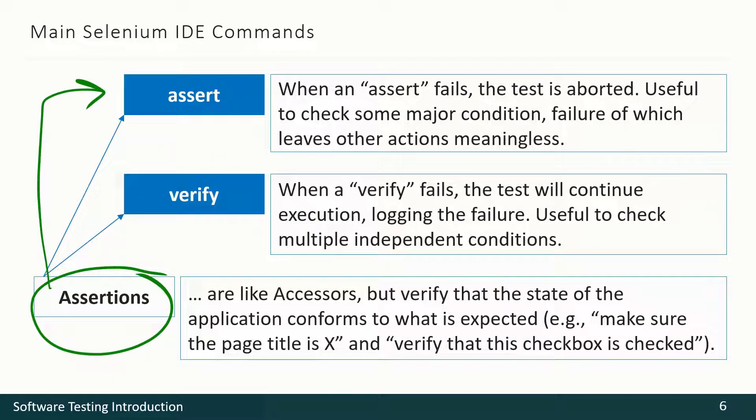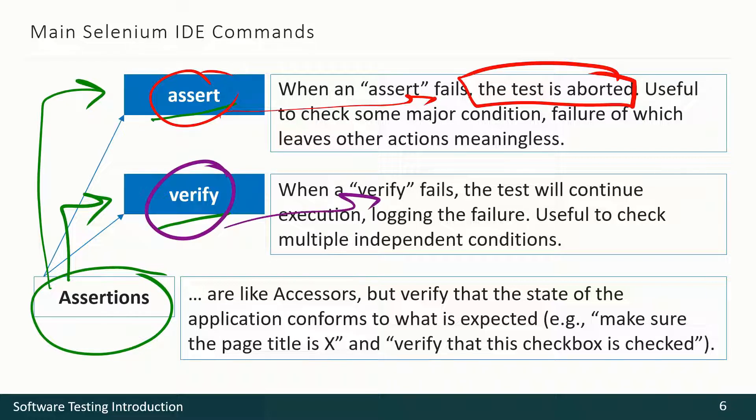Assertions are divided into two equal lists, commands starting with assert or with verify. The difference is the following. When assert fails, the whole test is aborted. It does not continue to the end. But when verify fails, the test will continue execution and just will log the issue.